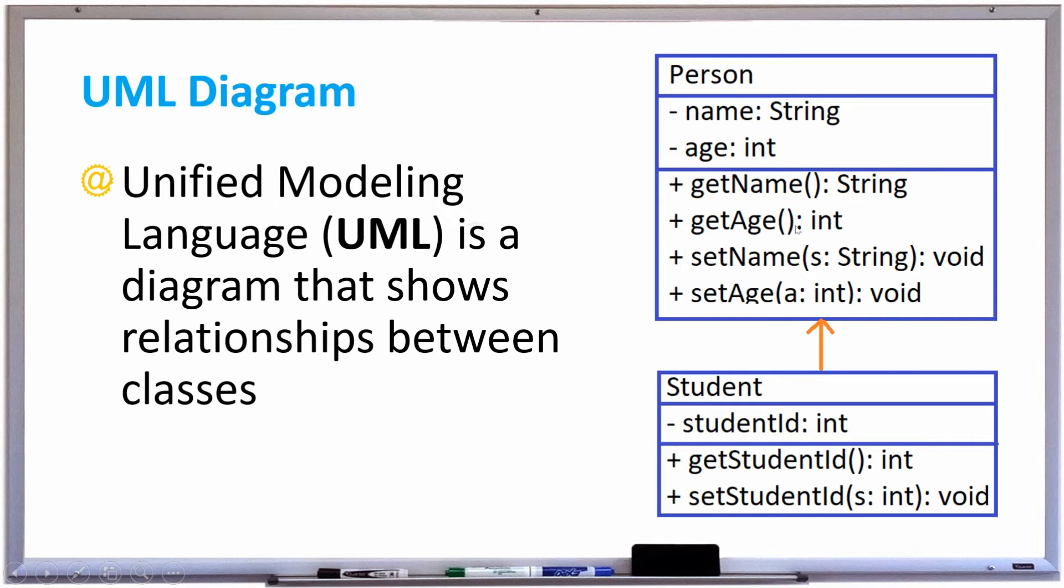GetName and GetAge have no parameters, but GetName returns a string and GetAge returns an integer, whereas SetName and SetAge have one parameter. The parameter for SetName is string.